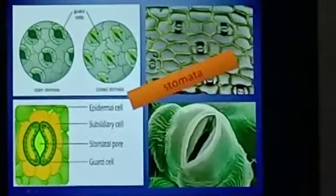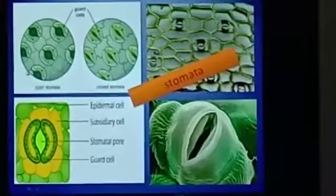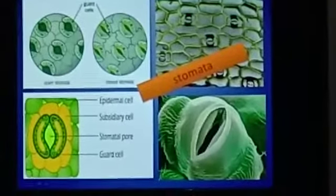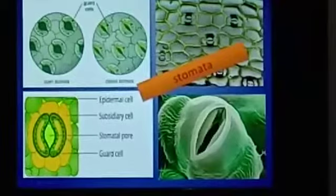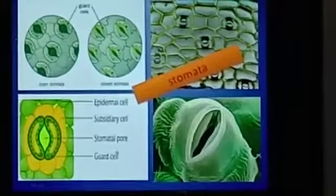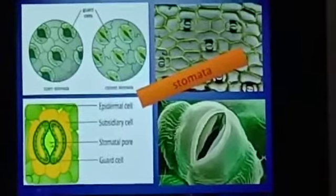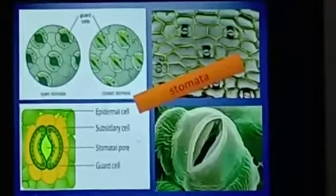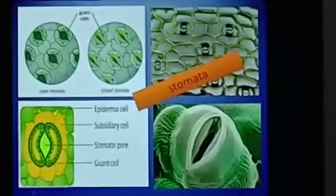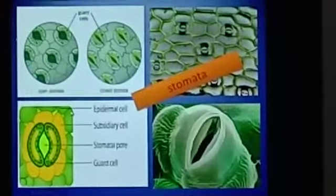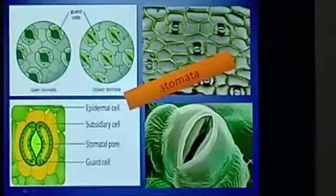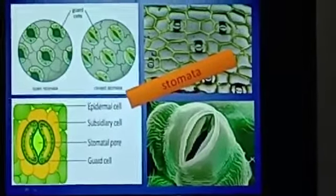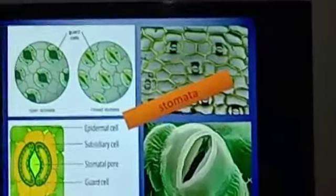The stomata can close and open. This is an open stomata with the guard cell. The guard cell, when it shrinks, it closes the stomata. In this you can see the structure of the stomata. Here is the stomatal pore, that is the hole through which carbon dioxide enters and oxygen goes out. These are the epidermal cells of the leaves. And these two kidney-shaped cells are called the guard cells. They help in opening and closing the stomata. And these are subsidiary cells.